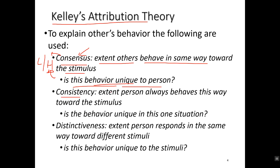If you see me playing with my cat and enjoying it, and then you see other people playing with my cat, that's a consensual behavior — the behavior is not unique, so that is a high level of consensus. Consistency refers to the extent to which the person always behaves this way towards the stimulus. If you see me petting my cat and observe me in other situations and find I always play with my cat, that would be a high level of consistency.